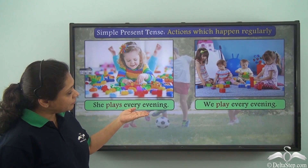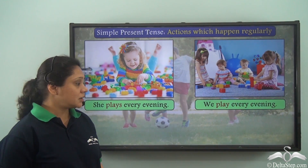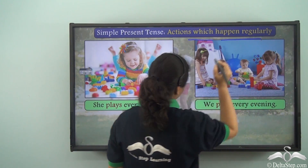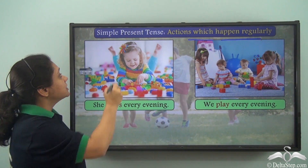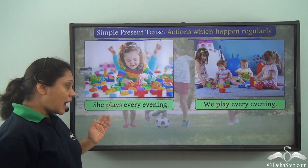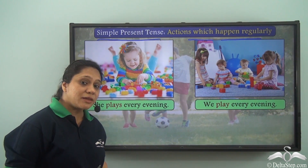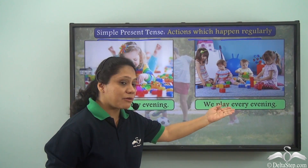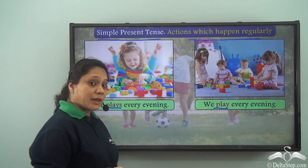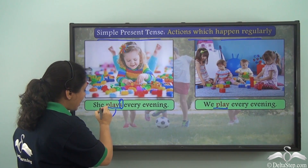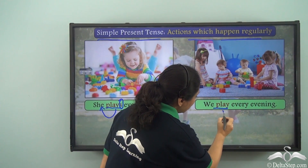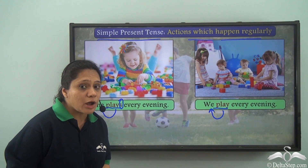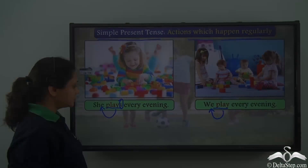She plays every evening. We play every evening. Now both these sentences show us actions which happen regularly, so these sentences are in the simple present tense. Let us identify the verbs: she plays every evening — plays; we play every evening — play. Here we have used the singular verb with she and the plural verb with we.